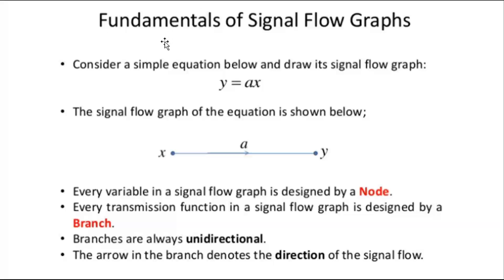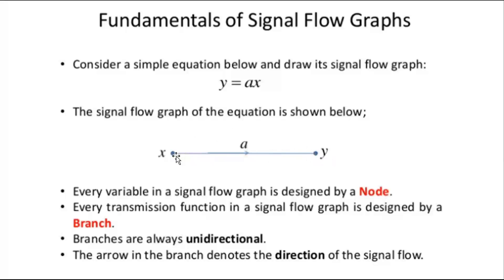A signal flow graph consists of a network in which nodes are connected by directed branches. It shows the flow of signal from one point of a system to another. Consider a simple algebraic equation: y is equal to a into x. This can be represented in the form of a signal flow graph, where x and y are variables, y is the output, x is the input variable, and a is a constant or gain. The output y equals input signal x multiplied by a.